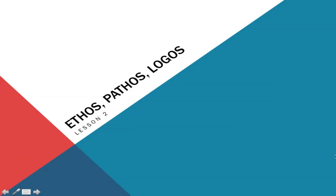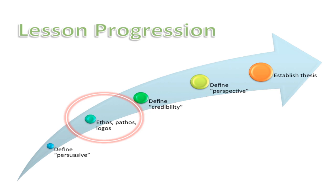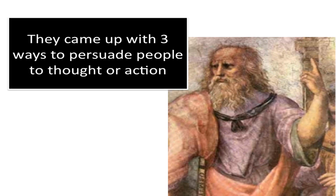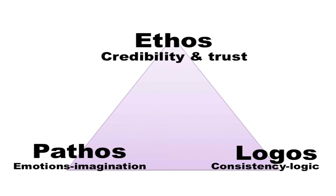Lesson two is on ethos, pathos, and logos. We learned about what persuasion is; now we're going to talk about three ways that you can persuade people. We get this from the ancient Greeks who studied logic and persuasion. We still use their techniques to this day. They came up with three ways to persuade people - either changing their thinking or getting people to do something they wouldn't normally do.